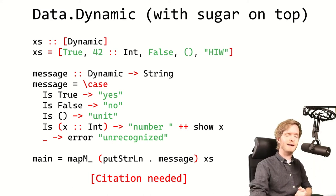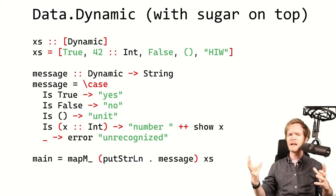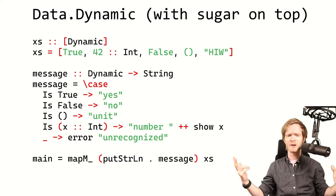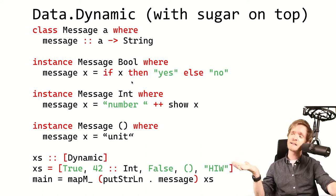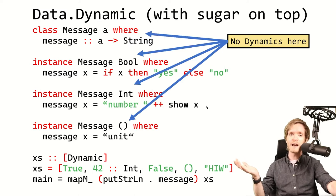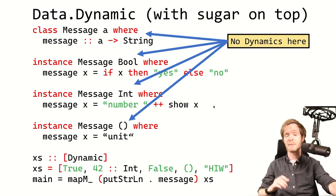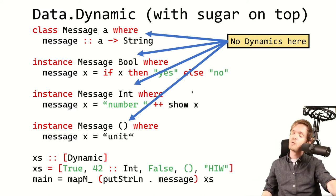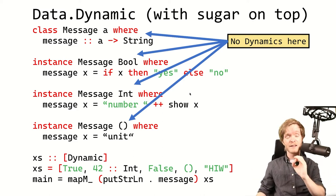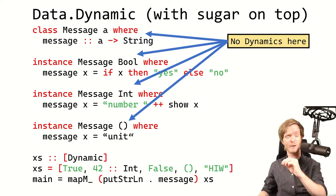Another caveat is that in Haskell we have a lot of type classes — a lot of what we do uses type classes. So being able to make things dynamic doesn't really help if you're going to apply it to a type class and then it doesn't work. Here's one such example: we have a type class with instances for bool, int, and unit, but there's no instance for message dynamic. So if you call this message function on a list of dynamics, it will just complain that there's no instance for message dynamic. We would like to be able to work with type classes as well.